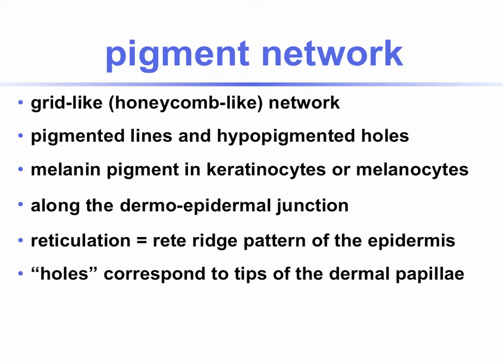The pigment network is a grid-like, honeycomb-like network consisting of pigmented lines and hypopigmented holes. It contains melanin pigment in keratinocytes or melanocytes along the dermoepidermal junction, and the reticulation is due to the rete ridge pattern of the epidermis. The holes correspond to tips of the dermal papillae.